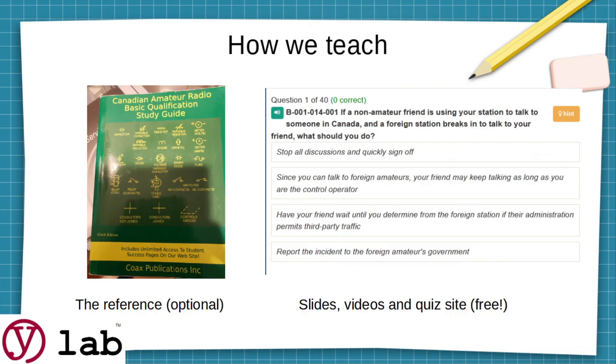Now, how we teach the class. Most classes are taught with this book on the left. This is a great guide. It's the official study guide, or almost official. It is the most popular one in Canada. It's written by some gentlemen in our local club. It's quite a book. We consider it for this class to be a reference. We think every amateur radio operator in Canada should have this book. You can look up just about any topic around antennas, the rules, all kinds of how-to sections, but we don't require it for this class.